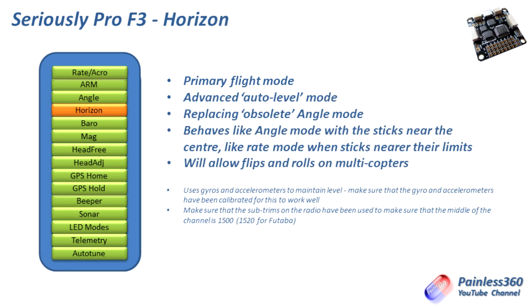Horizon mode is the last of the primary flight modes and this is an advanced auto-level mode. Towards the center of the stick you get an auto-level angle-style response, but if you go right to the edge of the aileron or elevator you start going into rate mode and it will still allow you to do things like flips and rolls. This is a nice one for more experienced pilots that want the safety of a self-level but still want to be able to do some tricks.